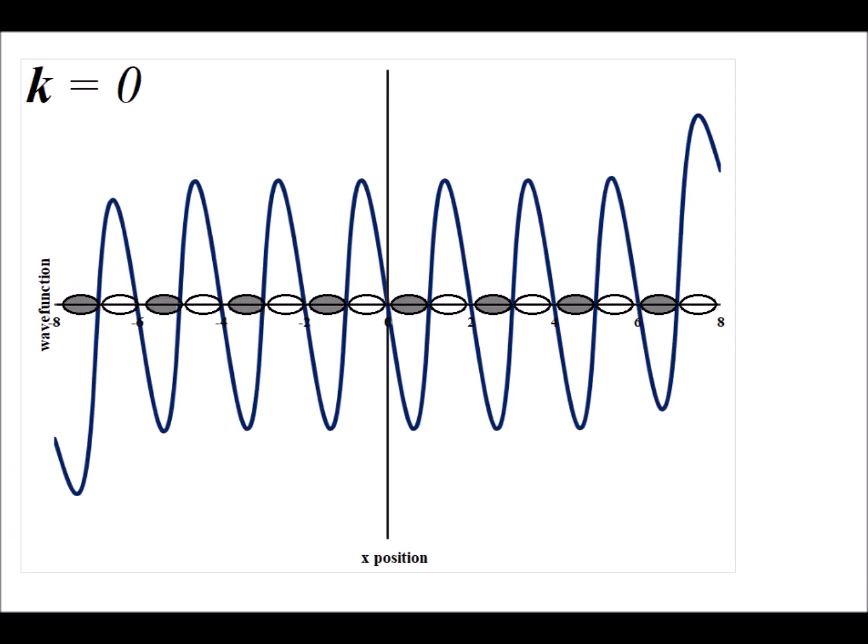The second and final atomic type we're going to look at are 2px orbitals, which extend along the x-axis. Now we look at the situation when k is equal to 0 for the Bloch functions. We notice here that there is a very rapid oscillation between negative and positive values for the wave function. This is consistent with the situation where the p orbitals are all arranged such that all the interactions are anti-bonding when k is equal to 0.